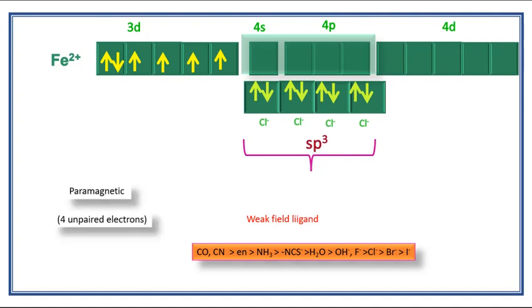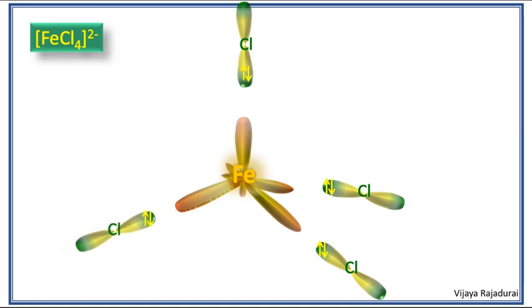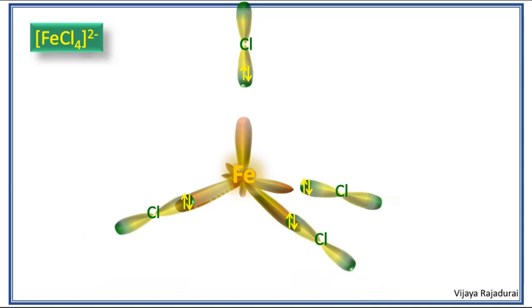After hybridization, this complex contains 4 unpaired electrons. It is paramagnetic in nature. Here you can see how the overlapping takes place between the 4 chloride ligands and sp3 hybridized orbitals of the central metal atom.